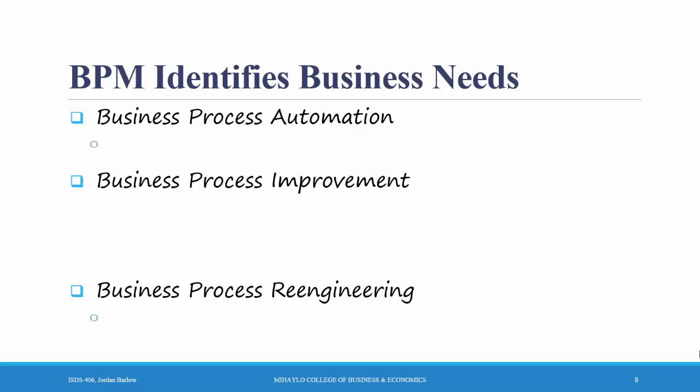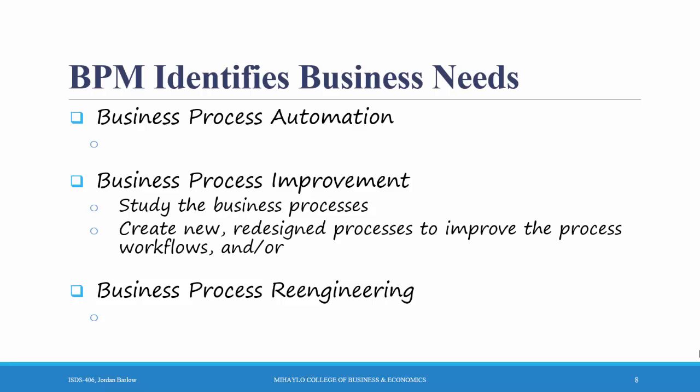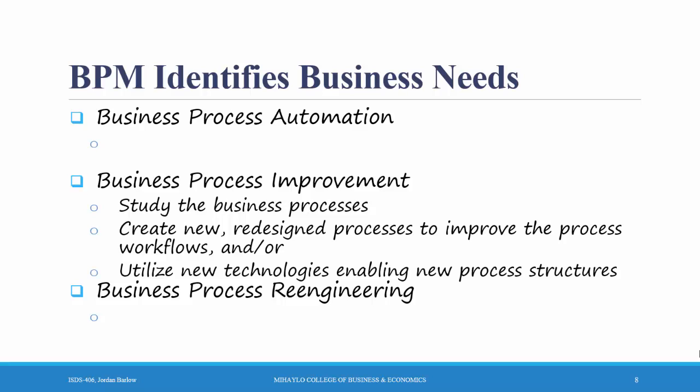In business process improvement, you study your business process — such as your customer ordering process — and then create new or redesigned processes to improve it. This may or may not involve using new technologies that enable the new process structures. For example, maybe in your old process customers would call into a customer service line to start their ordering process and then a sales rep would later get in touch with them. One improvement might be having customers contact the sales rep directly. Making that kind of change is known as business process improvement.